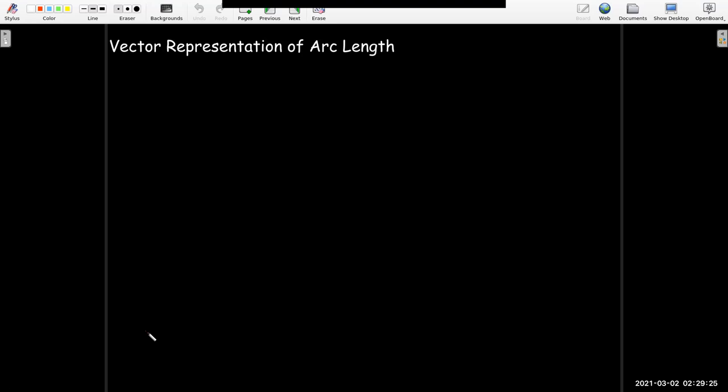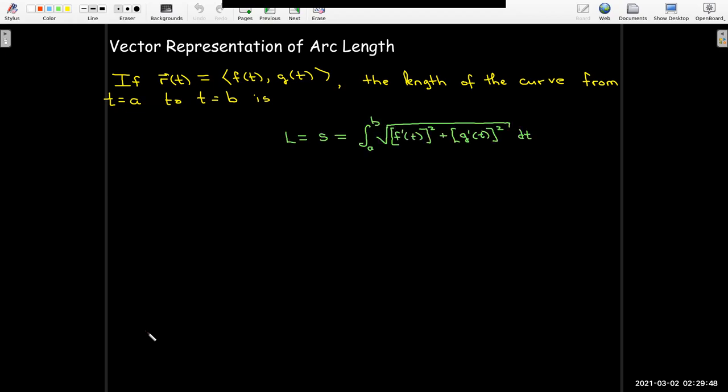Now taking the square root of the sum of the squares in the Pythagorean theorem is something that we've seen with vectors as well. So let's say I have a vector representation of the curve with components f of t and g of t. And then I could calculate the length of the curve using essentially the same formula that I had for the parametric representation. My f prime of t is really my dx/dt, and g prime of t is really my dy/dt.